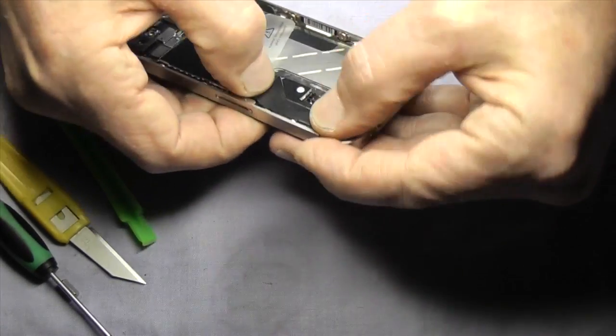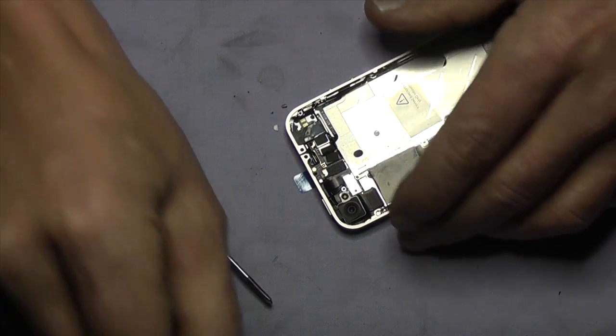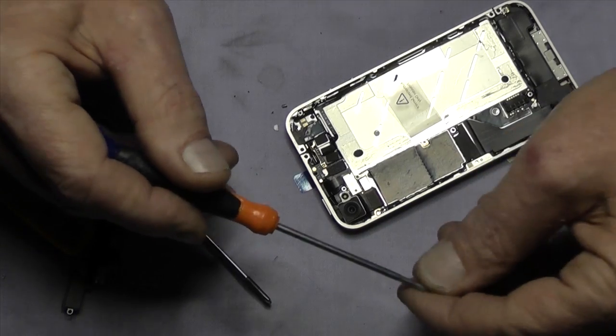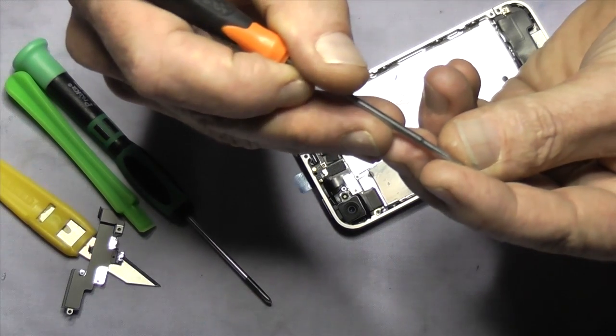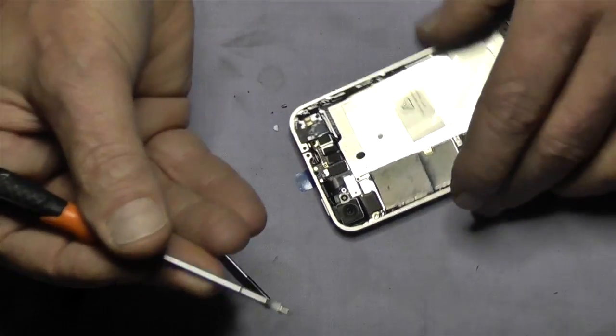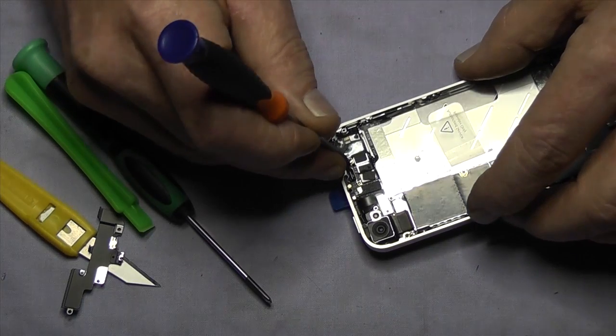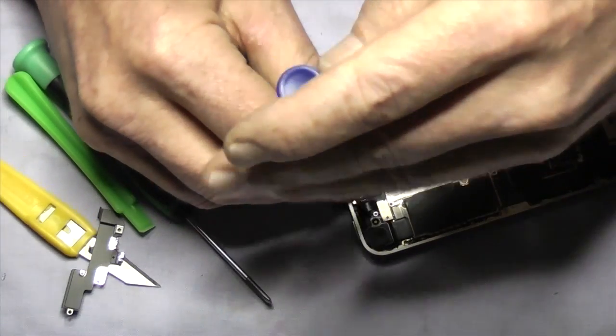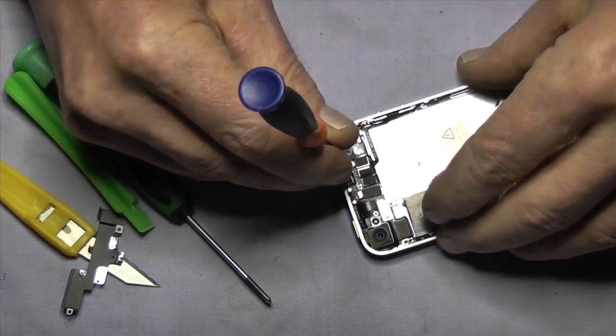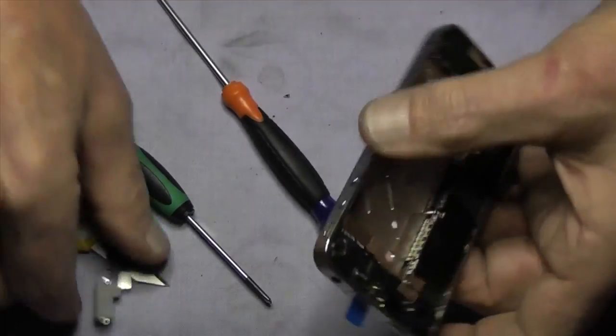Now we'll snap back on the dock ribbon flex. Next thing we're going to take care of is the post screw. This is like a standoff for the top plate which also serves as an aerial for the WiFi. I'll show you that in a second. That's in.